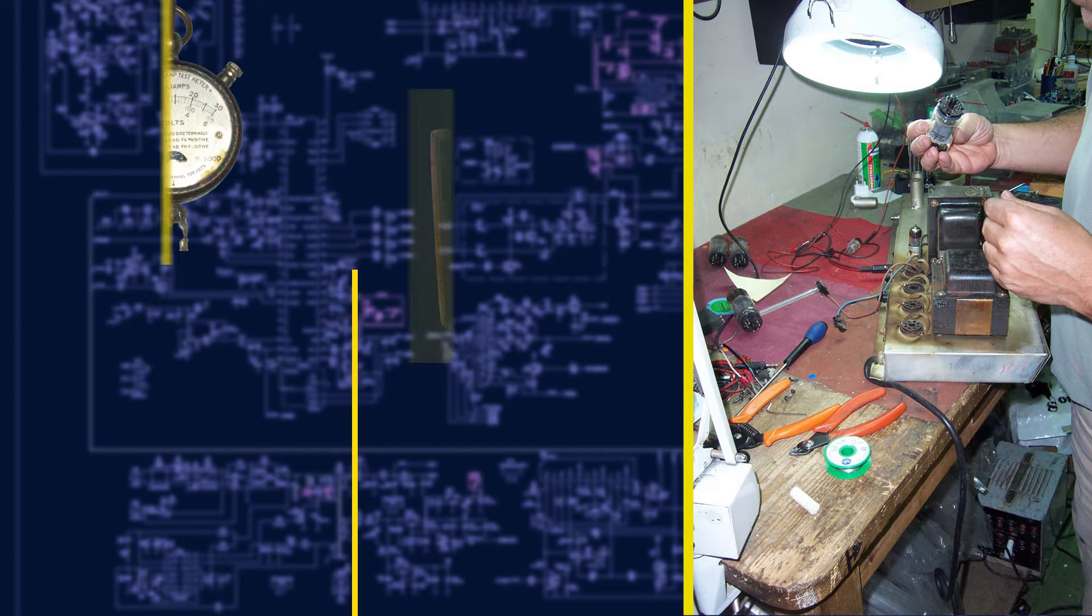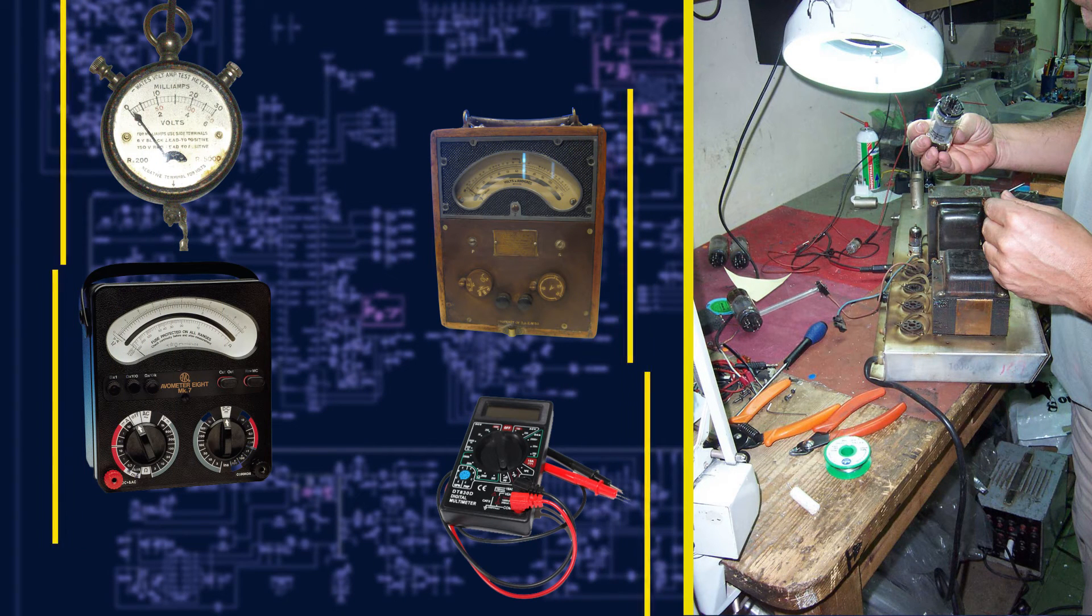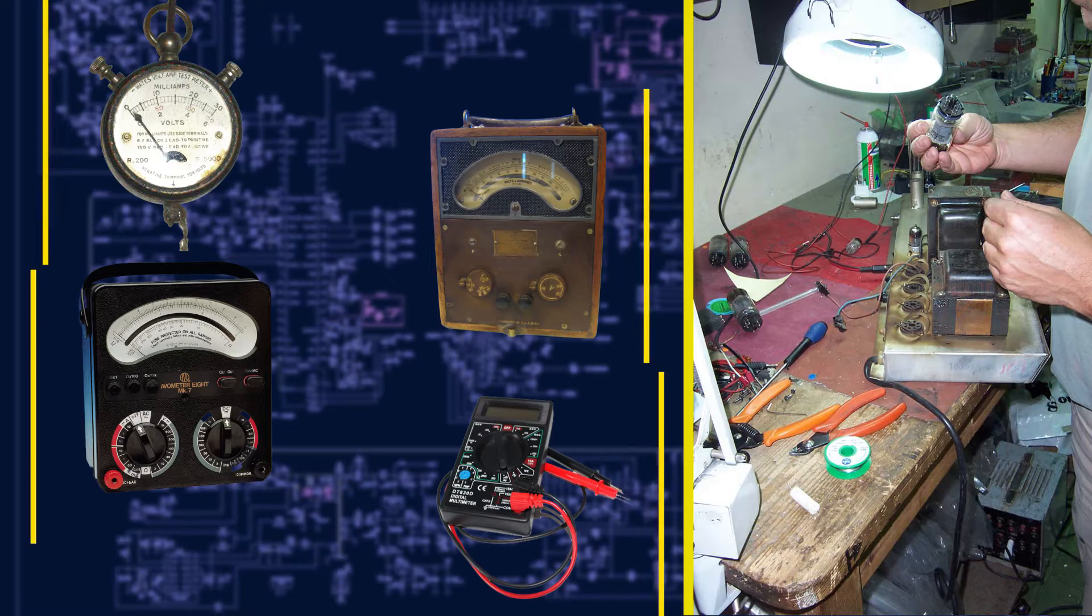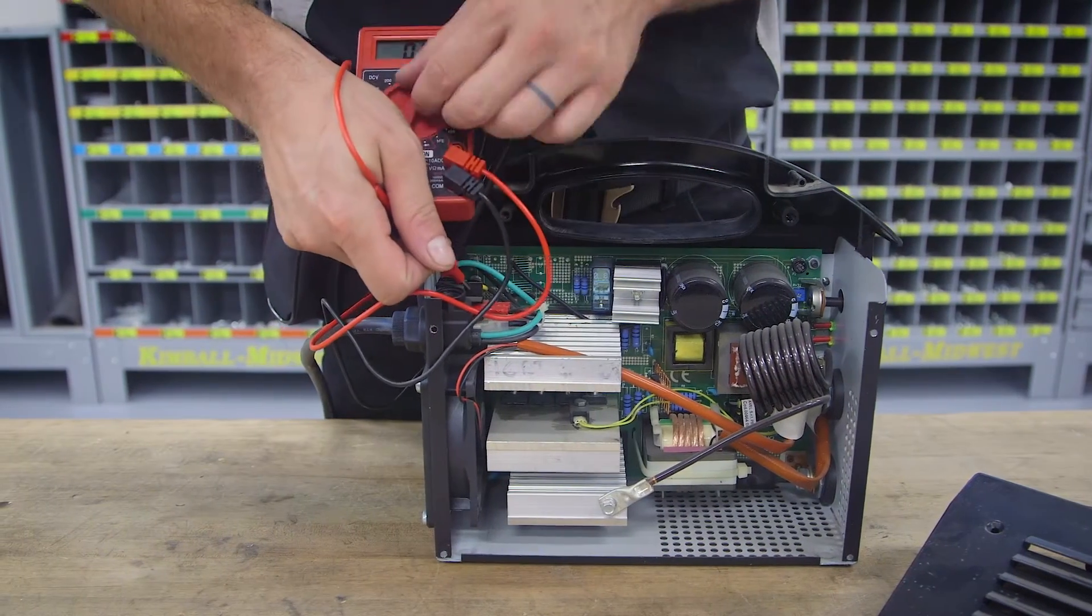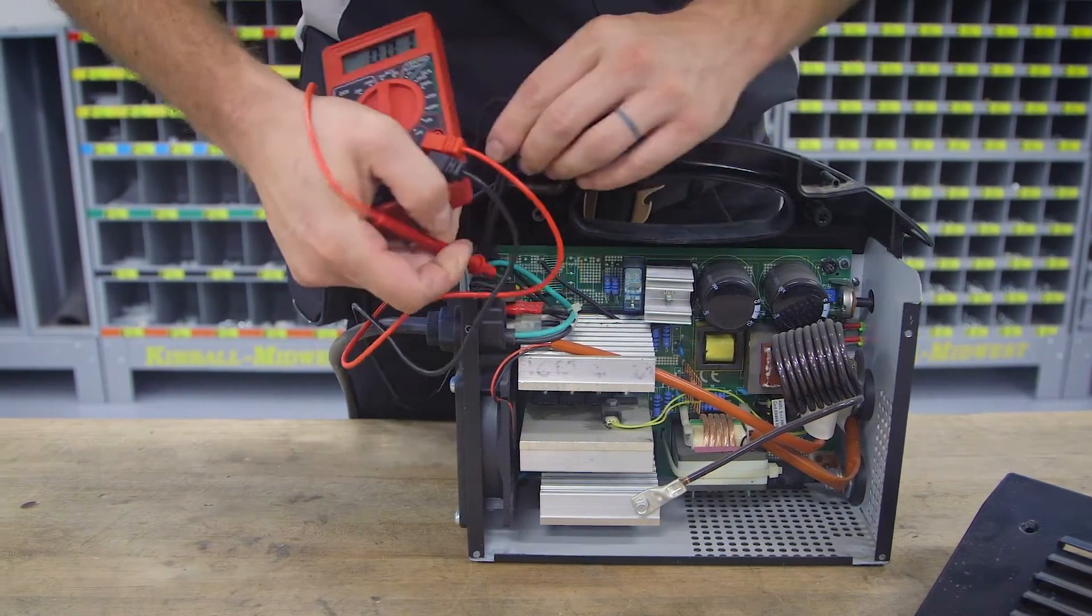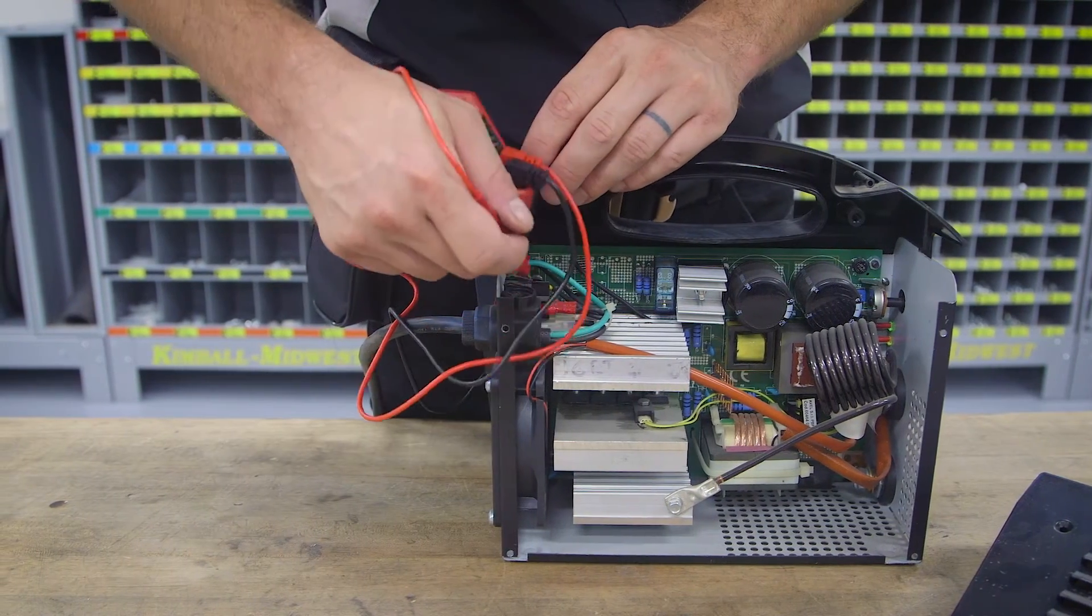If you're working at a workbench, the type of multimeter that's been used for the past 100 years will do just fine. But in the field, working in tight, difficult conditions, a conventional multimeter isn't your best option.